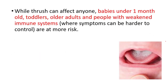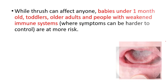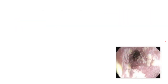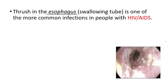While thrush can affect anyone, babies under one month, toddlers, older adults, and people with a weakened immune system are at more risk. Thrush in the esophagus is one of the more common infections in people with HIV and AIDS.